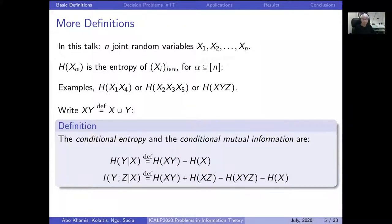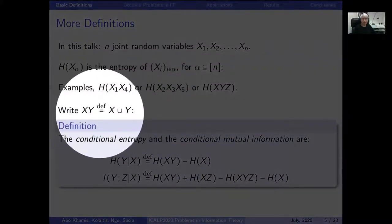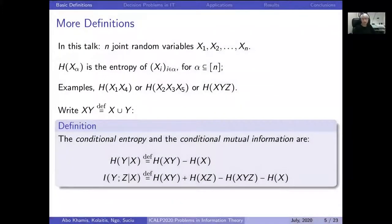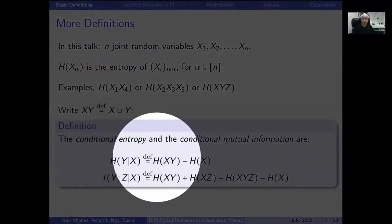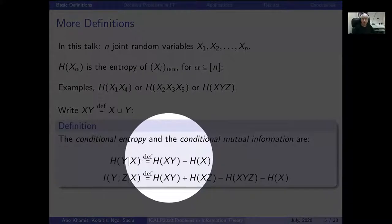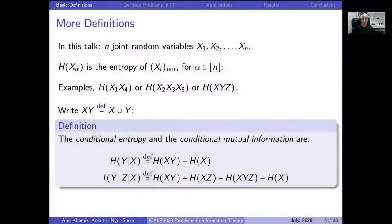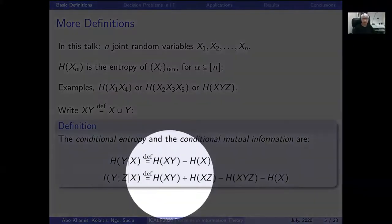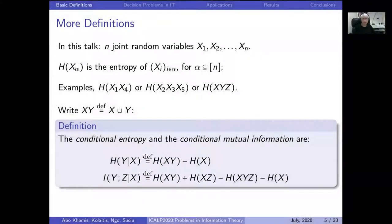When x and y are sets of random variables, we denote their union by simply writing x, y. The conditional entropy h(y|x) is simply the difference of two entropic terms — the union of all variables minus the entropy of the variables on which we condition. The conditional mutual information I(y; z | x) is a sum of four entropic terms. The details are not very important for this talk.